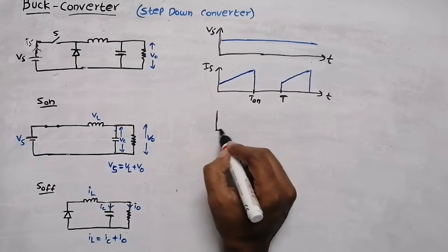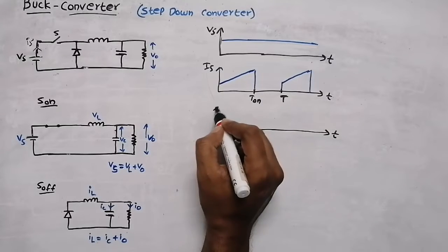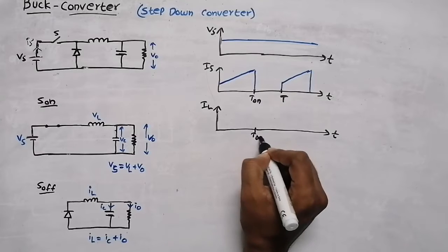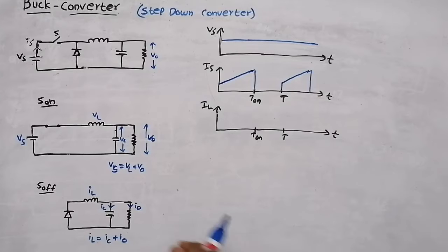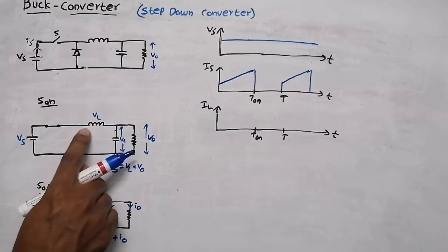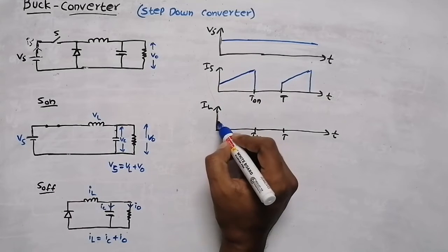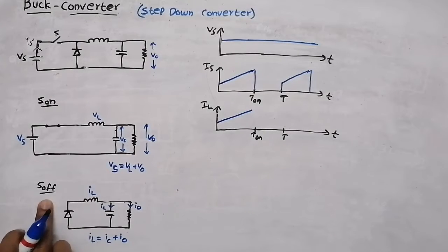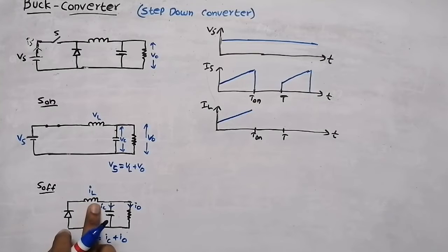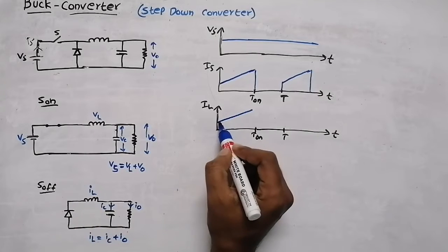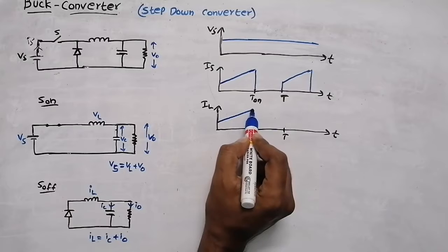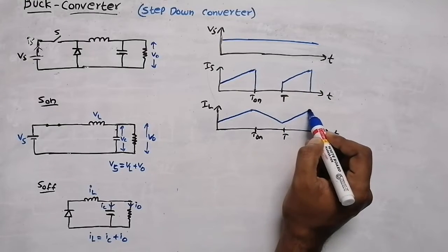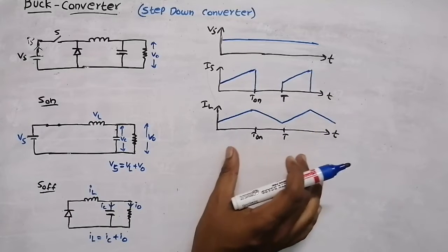Now we draw the inductor current waveform. During T_on, whatever source current flows, the same flows through the inductor — so inductor current increases linearly. When the switch is off, the stored energy in the inductor discharges through the capacitor and output, so the current decreases. When the switch turns on again, the inductor stores energy again, and when off, it discharges — this cycle repeats.